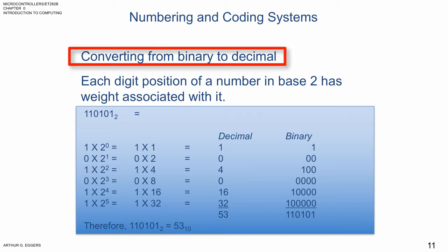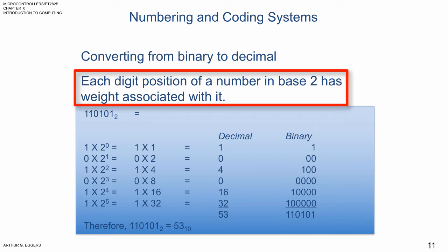So let's look at converting then from a binary value to a decimal value, applying that same rationale, those powers associated with the number. In this case, instead of a power of 10, we're going to look at a power of 2. Same powers, 0, 1, 2, 3, 4, and 5, but the representation then becomes a little different. So each digit position of a number in base 2 then also has the weight associated with it.